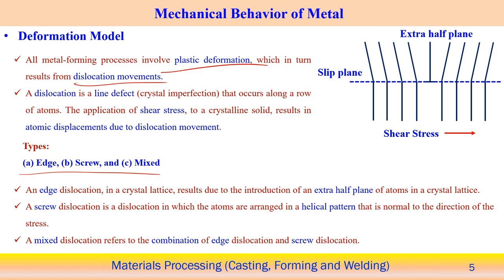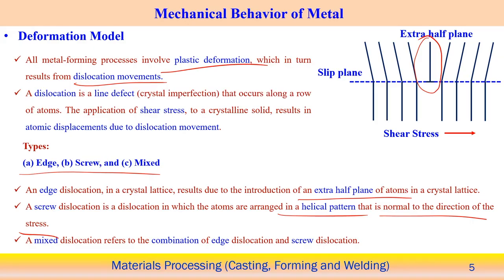Edge dislocation is basically represented by an extra half plane of atoms in a crystal lattice. It tries to create some kind of displacement in the lattice, disturbing the regular arrangement of atoms. This extra half plane represents the edge dislocation. Similarly, screw dislocation can be represented as atoms arranged in a helical pattern normal to the direction of stress — with the application of stress it creates a helical pattern, which is the ideal representation of screw dislocation. Sometimes the dislocation can be a mix of edge and screw dislocation together. Each and every dislocation holds some amount of strain energy during this process.